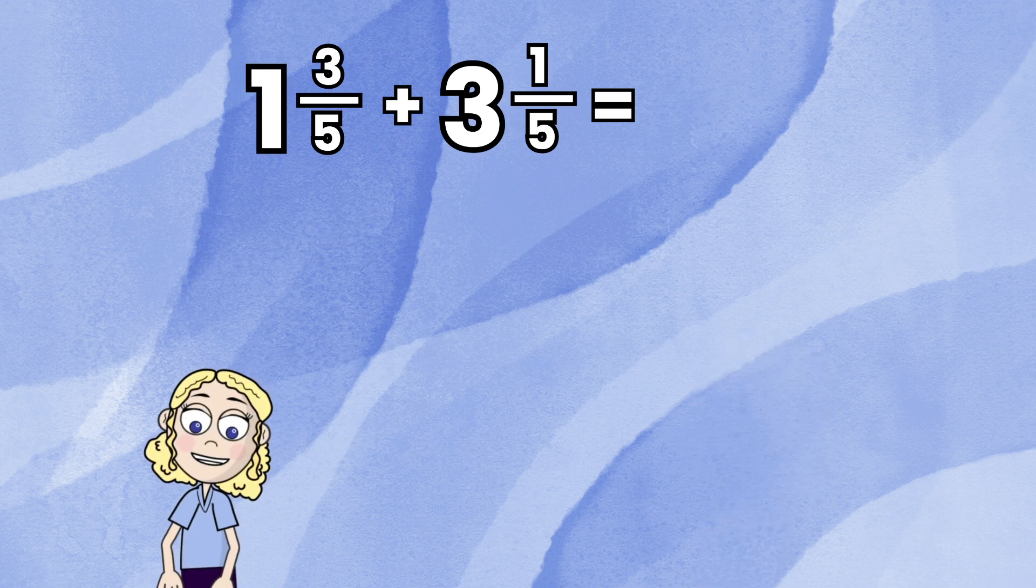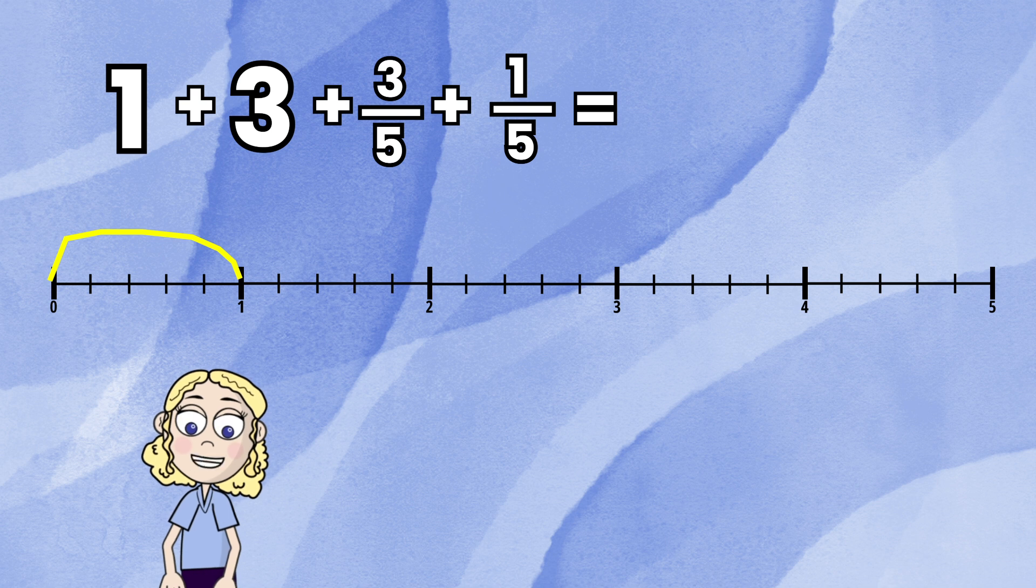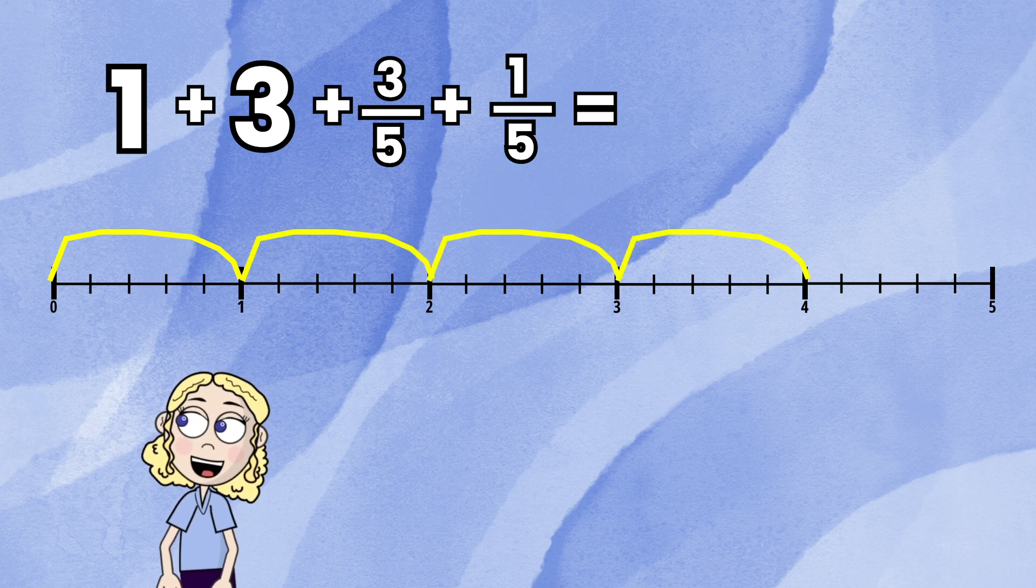I'm first going to rearrange these so that we are adding the whole numbers: 1 plus 3. Let's do those jumps on the number line. One jump, then I'm going to add 3 more jumps. We land on 4.